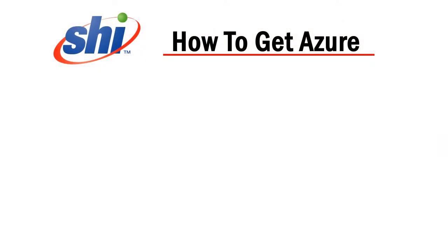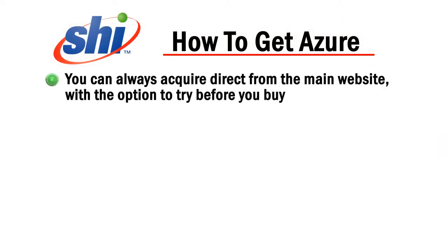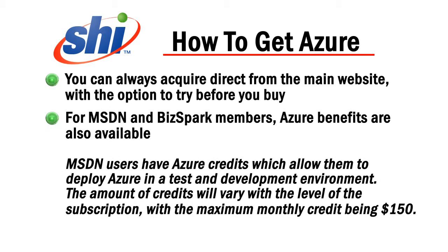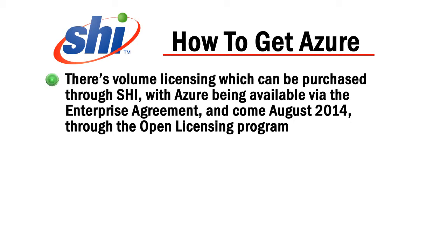So after all that, you may be wondering how can I get Azure? Well, there are a number of ways. You can always acquire directly from the main website with the option to try before you buy. For MSDN and BizSpark members, Azure benefits are also available. MSDN users have Azure credits, which allow them to deploy Azure in a test and development environment. The amount of credits will vary with the level of the subscription, with the maximum monthly credit being $150. Lastly, there's volume licensing, which can be purchased through SHI, with Azure being available via the Enterprise Agreement and, come August 2014, through the Open Licensing Program.